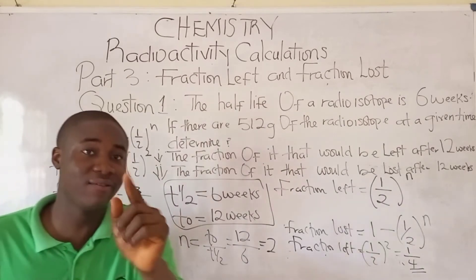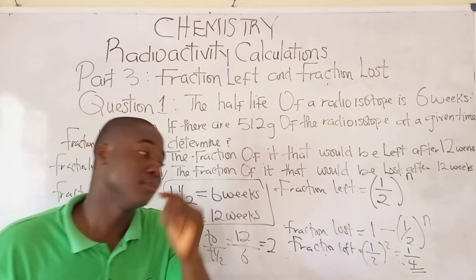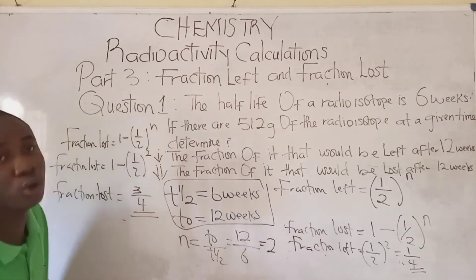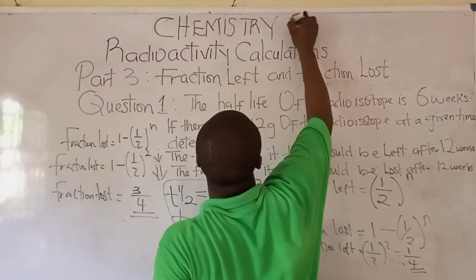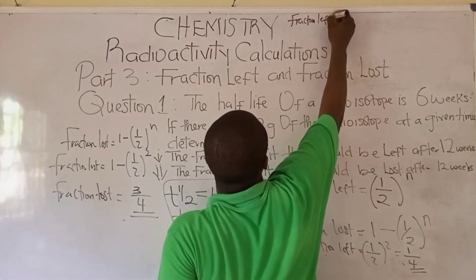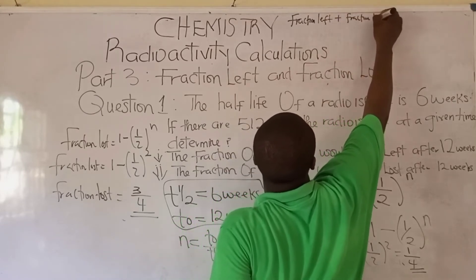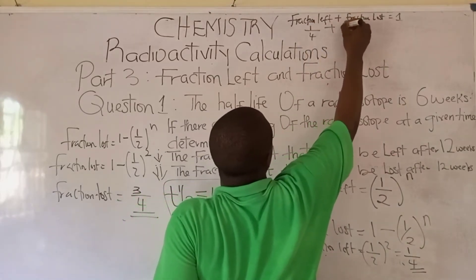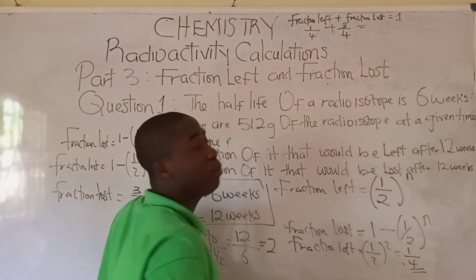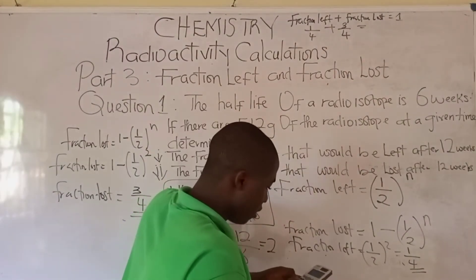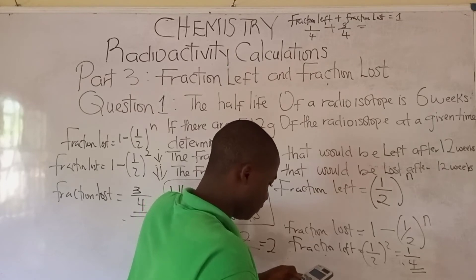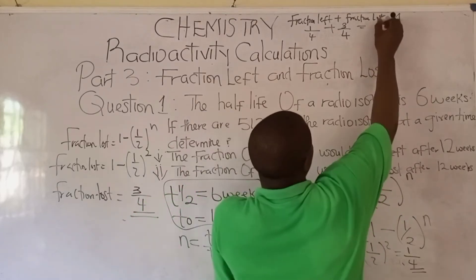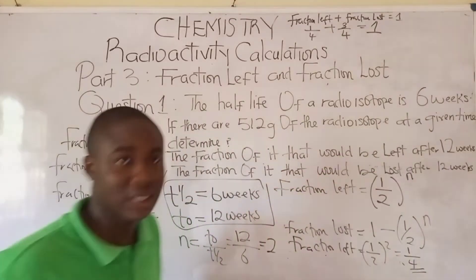Recall that fraction left plus fraction lost is equal to 1. To check if your answers are correct, add fraction left and fraction lost together. Fraction left is 1 over 4 and fraction lost is 3 over 4. So 1 over 4 plus 3 over 4 equals 1 — the answers are correct.